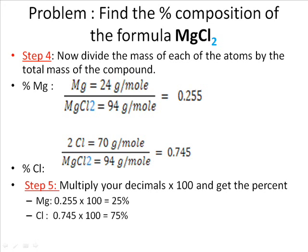And lastly, Step 5. Multiply your decimals times 100 and get the percent of each. Your Magnesium is 25%, your Chlorine is 75%, and that is your percent composition.